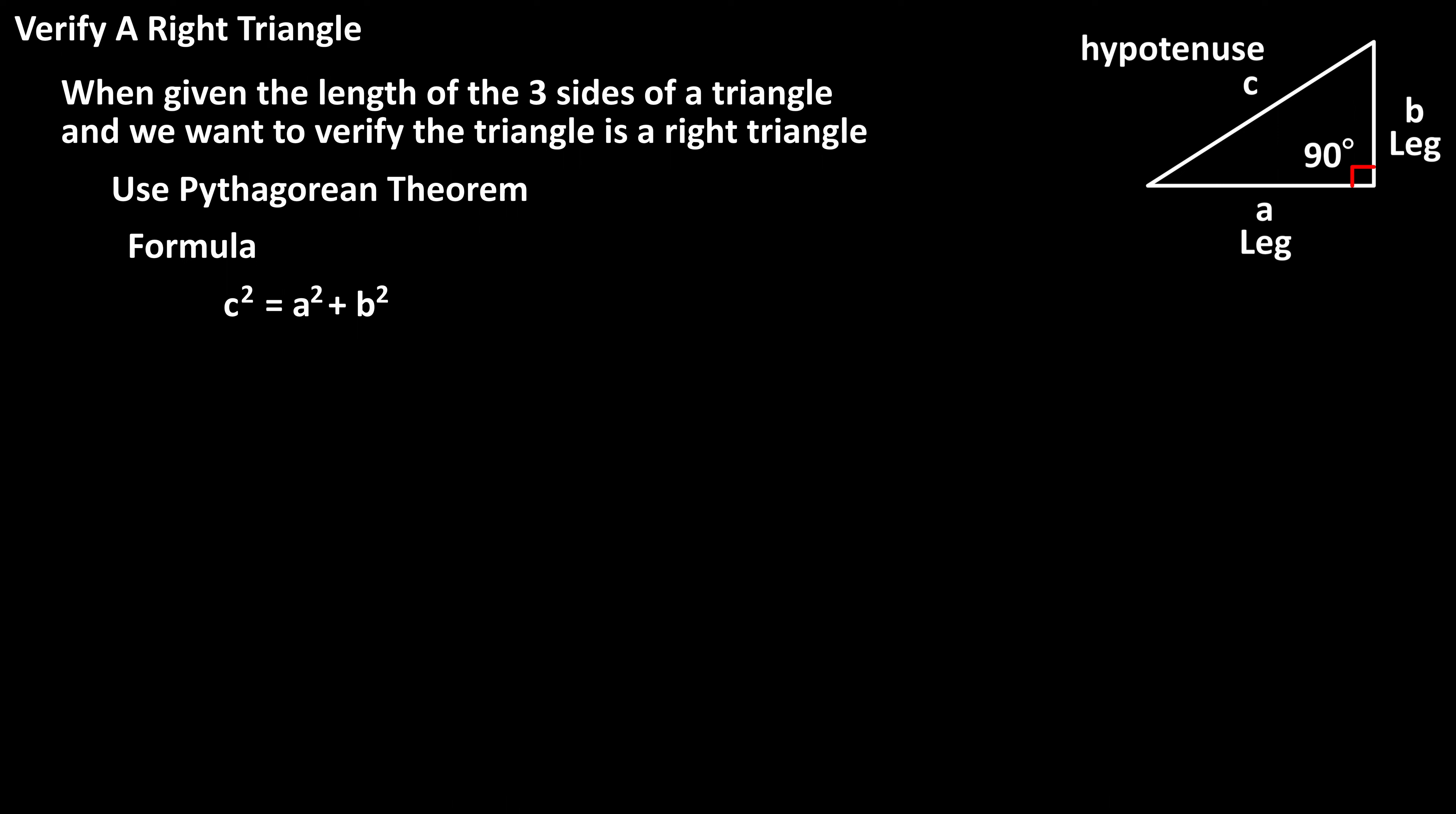As an example, let's say that we're given a triangle with sides of lengths 5.25, 7, and 8.75, and we need to verify that this is a right triangle.